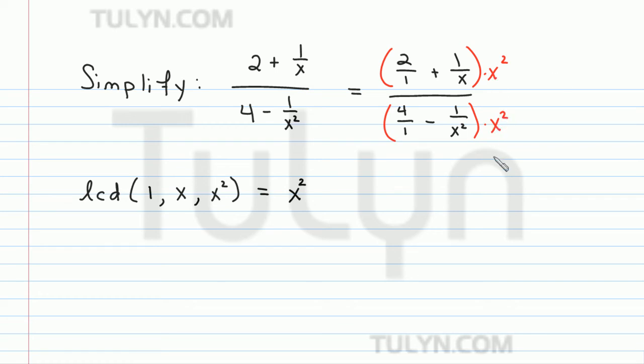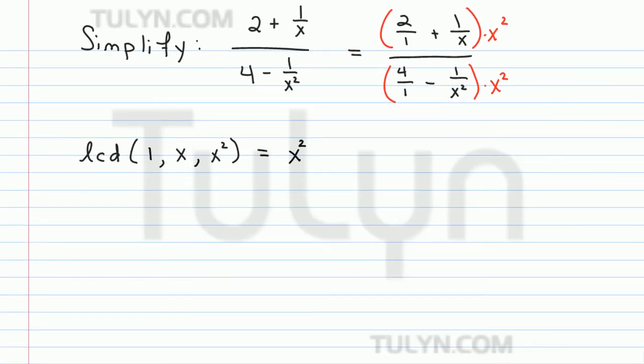Remember, we want to multiply the top and the bottom by the same thing, because then we'll essentially be multiplying by 1. So we won't be changing the expression at all. So now I'm just going to distribute this x squared into each of the terms.